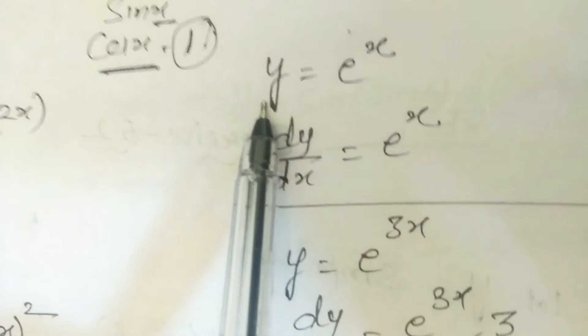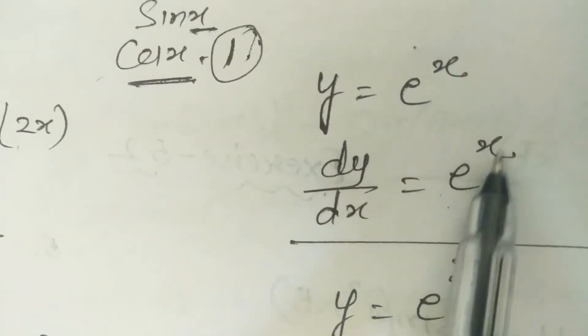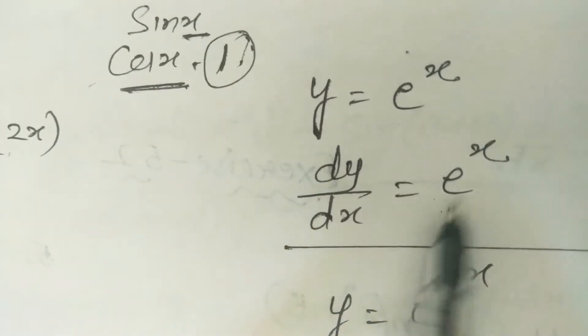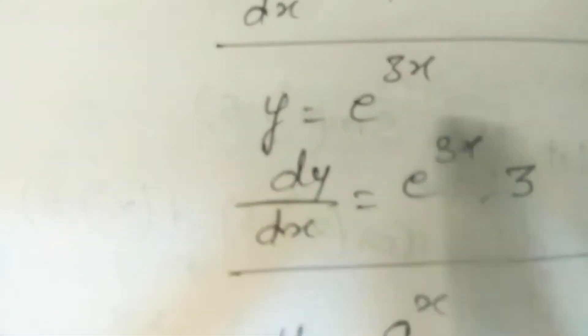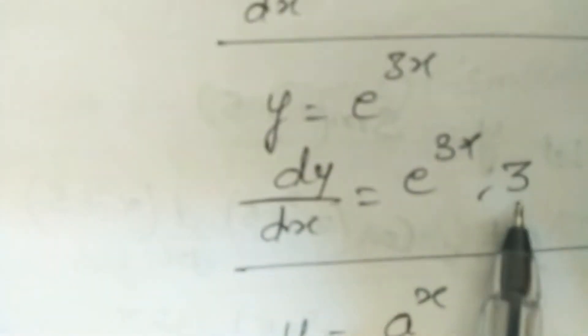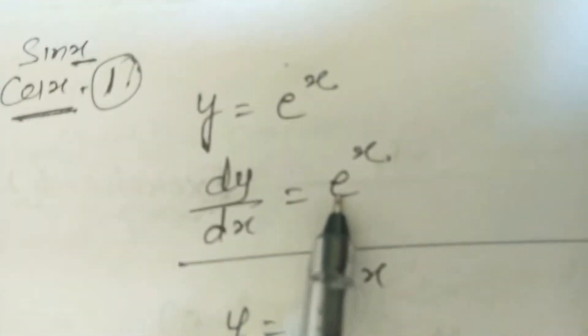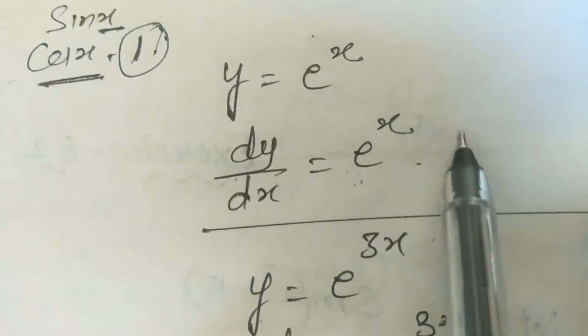The formula for the exponential function: derivative of e^x is e^x. For e^(3x), applying chain rule: e^(3x) · 3. For plain e^x, x derivative is 1 so we simply write e^x.